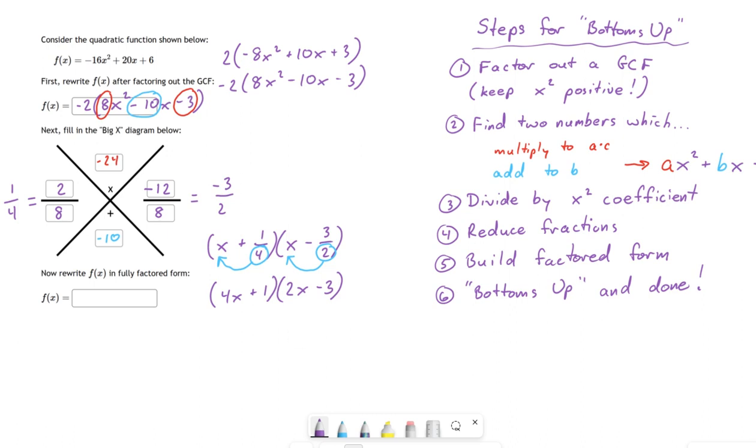It's that -2 from the beginning. Remember that GCF that we factored out? This guy over here. Don't forget him. It's still an important part of this polynomial.